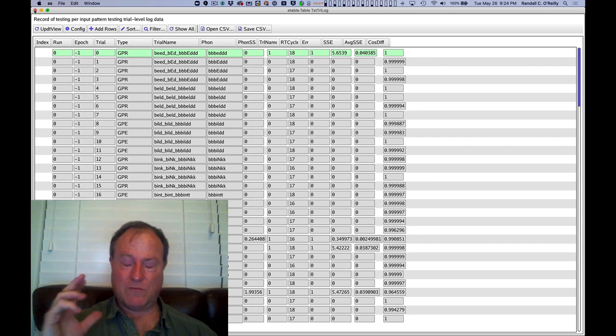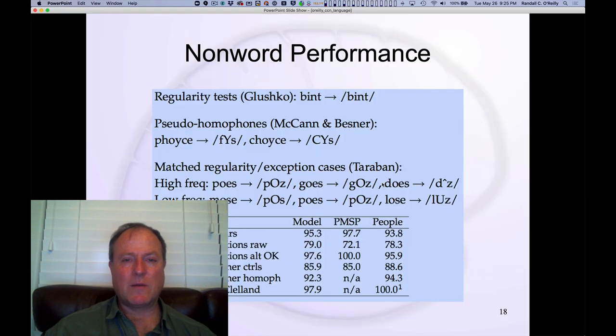In summary, this gives us a good idea about why it is that the direct pathway in the overall triangle model is able to pronounce non-words accurately by learning these regularities in the mapping between letters and phonemes.